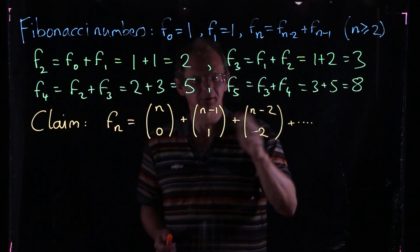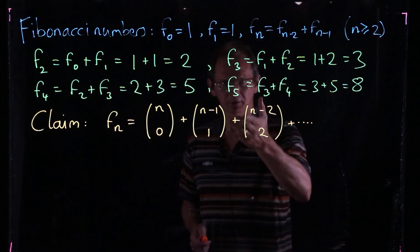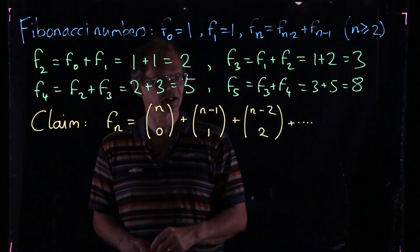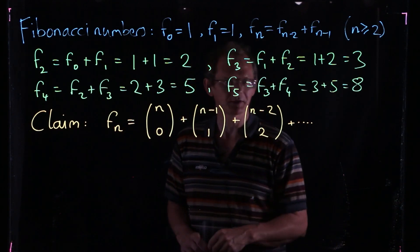So in principle this looks like it's an infinite sum, but of course it isn't really, because if we look at n choose k, the binomial coefficient, that's the number of ways of choosing k things from n. And if k is bigger than n, you can't do that.